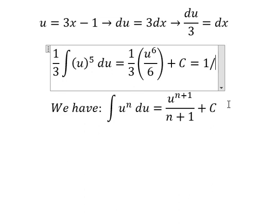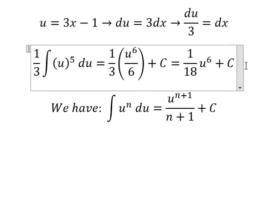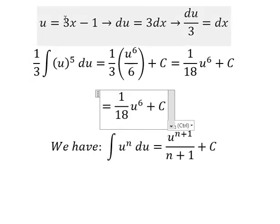Multiplying the denominators 6 and 3, we get 18. So we have 1 over 18 times (3x minus 1)^6 plus C, substituting back for u.